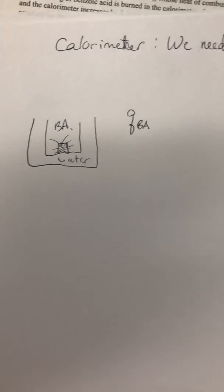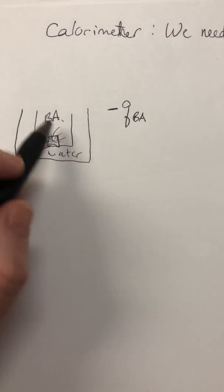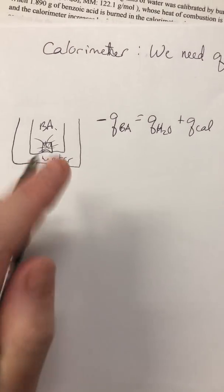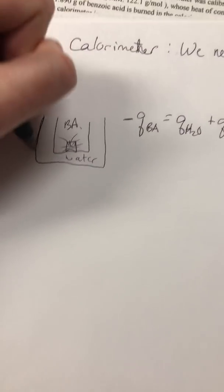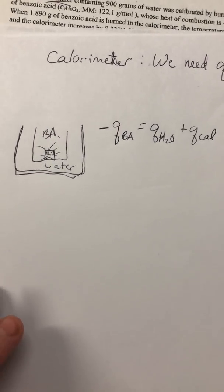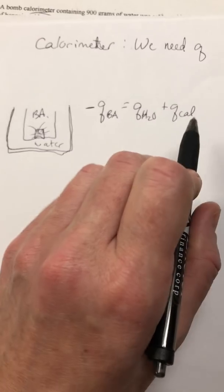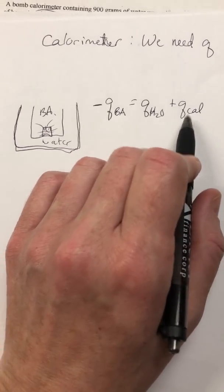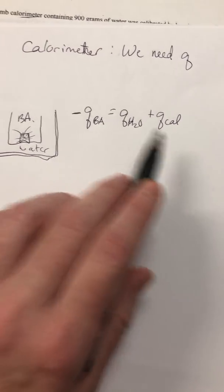The benzoic acid essentially explodes — it burns off, bonds are broken, and heat is released. That heat goes into two places: the water and the calorimeter itself. So the heat lost by the benzoic acid equals the heat gained by the water plus the heat gained by the calorimeter. If we can find each of these individually, we can find the heat capacity constant C of the calorimeter.